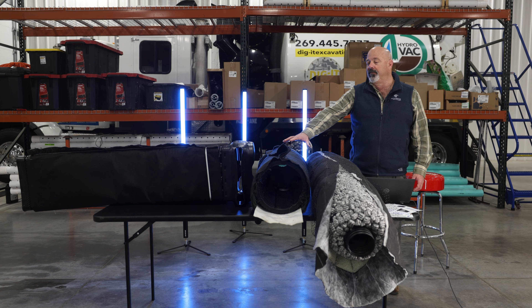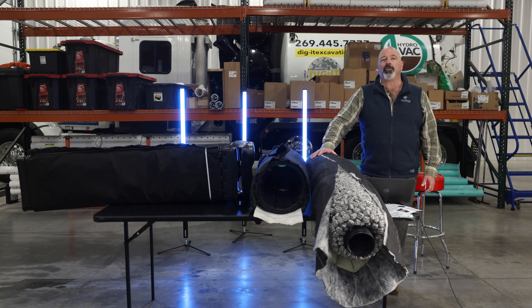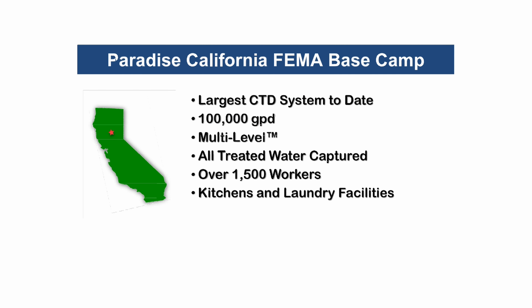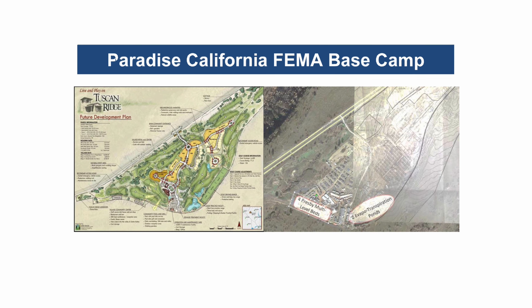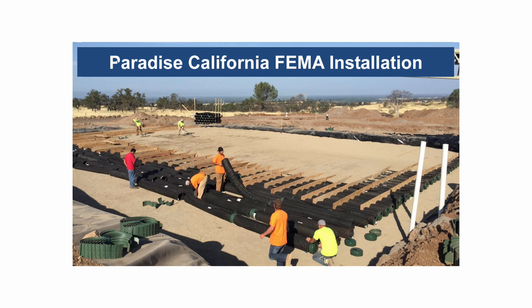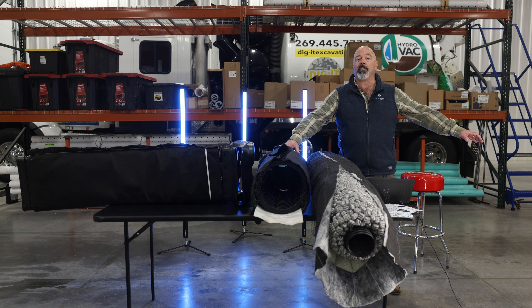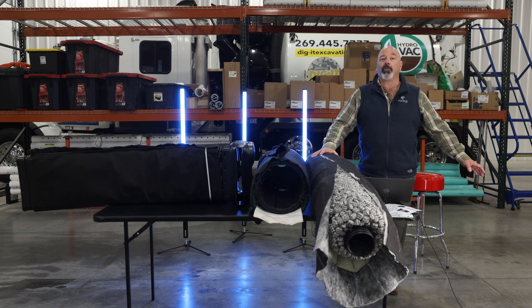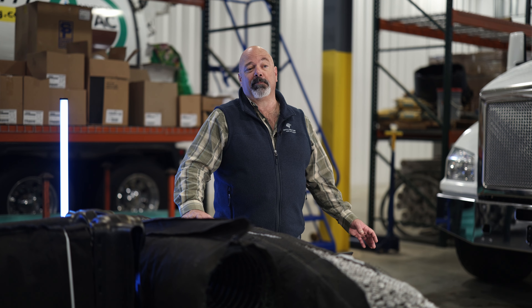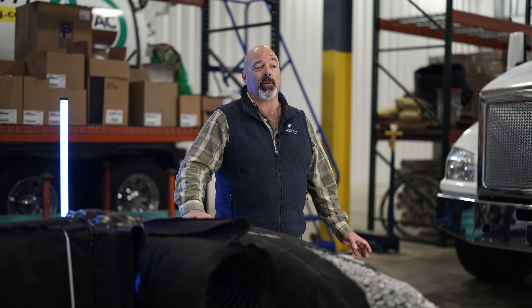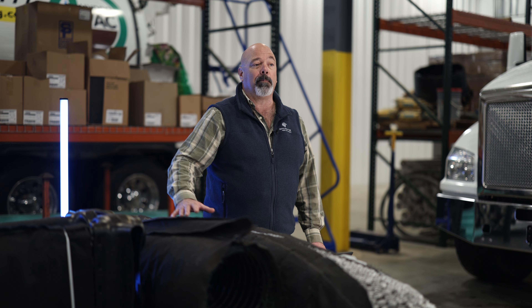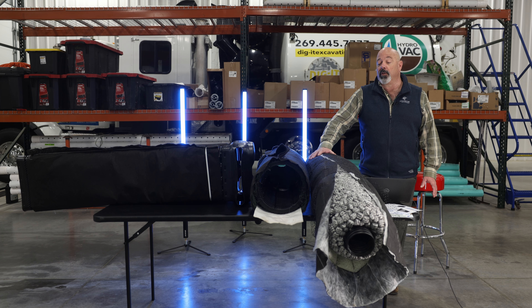We've got an Advanced EnviroSeptic system out in Paradise, in Chico, California, where the fires came through and destroyed 1,500 homes. FEMA built a man camp to rebuild that town, and they have a hundred-thousand-gallon-a-day system using the Advanced EnviroSeptic. They put a liner underneath it, catching all the liquid after it's been treated, running it through ultraviolet disinfection and reusing that water — storing it in a large pond and using it for irrigation to help plants grow in the mountains to eliminate mudslides. After the town gets redeveloped, they're going to utilize the system for a retail development on that same piece of property.